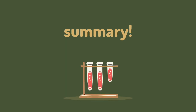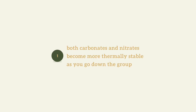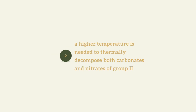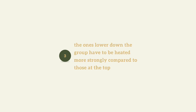This is the summary for thermal decomposition of Group 2 carbonates and nitrates. Number 1: Both carbonates and nitrates become more thermally stable as you go down the group. Number 2: A higher temperature is needed to thermally decompose both carbonates and nitrates of Group 2. Number 3: The ones lower down the group have to be heated more strongly compared to those at the top.